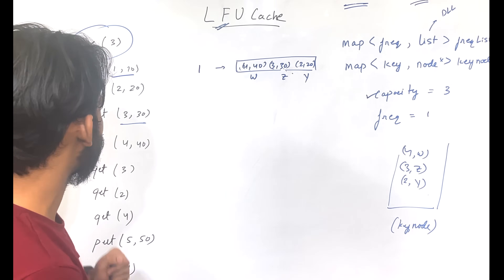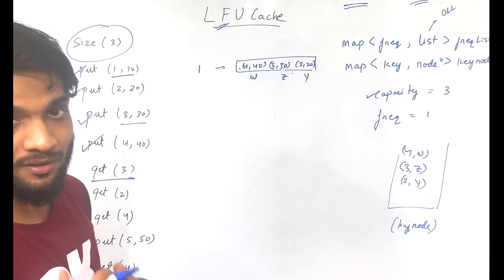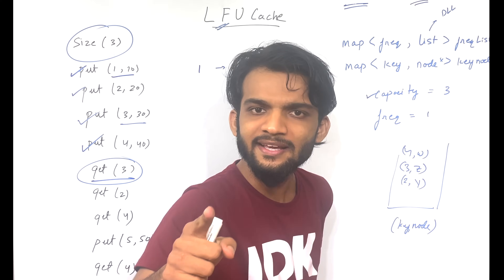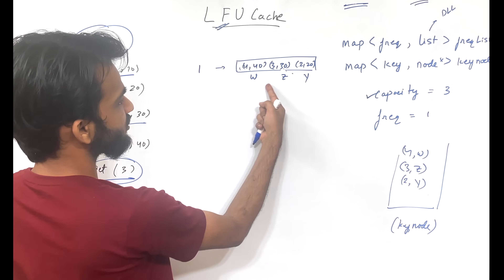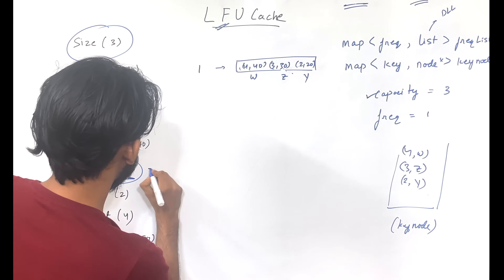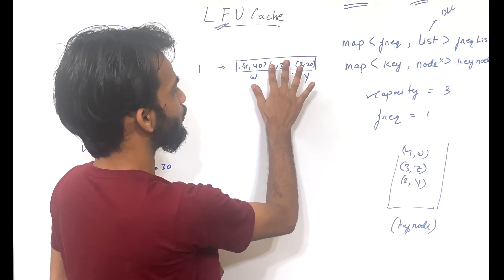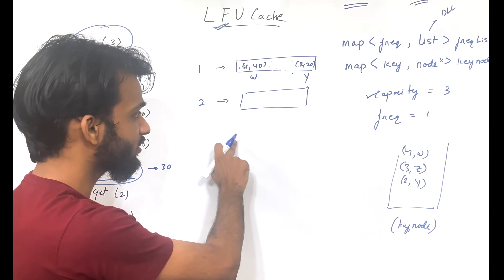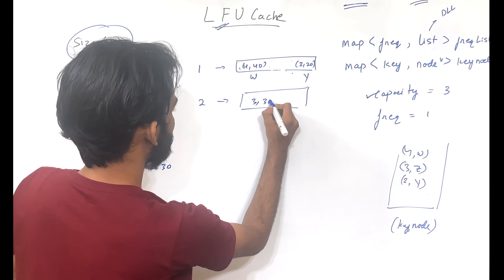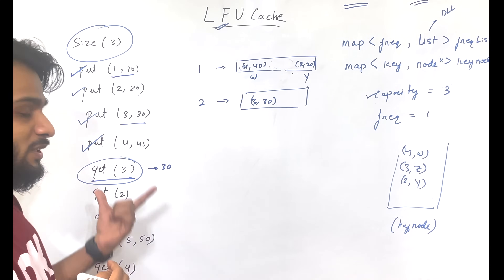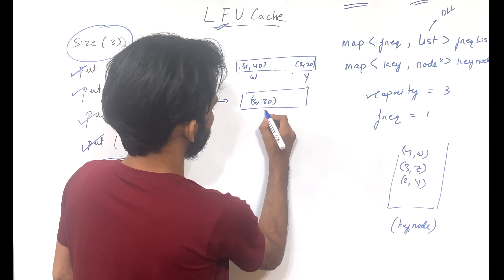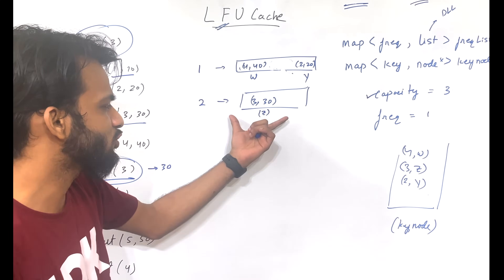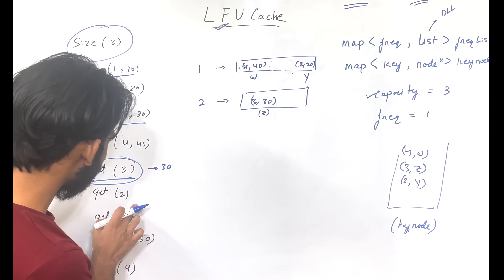Get(3): we go to the key-node map, find key 3 at address z, access the node, and get the value 30. But we need to delete this node from the frequency-1 list and move it to frequency 2, since it has now been accessed again. So we create a list at frequency 2 and put (3, 30) there at the front. The key-node map still points to the same node address z.